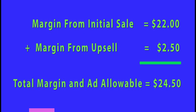And your total margin for every exercise device sold is $22 generated from exercise device sales, and $2.50 generated from DVD sales, or $24.50. Consequently, $24.50 is your ad allowable.